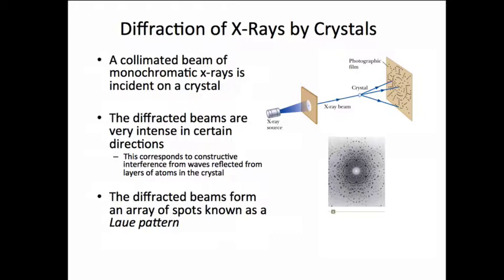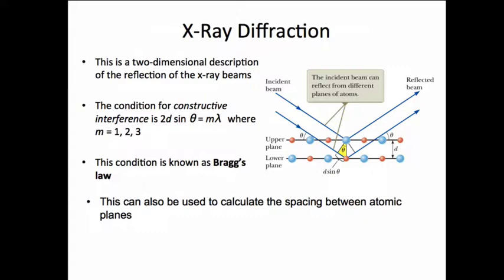The father and son team of William and Lawrence Bragg were able to establish the relationship between the structure of the crystal and the diffraction pattern that the scattered X-rays would produce. This won them the Nobel Prize in 1915.